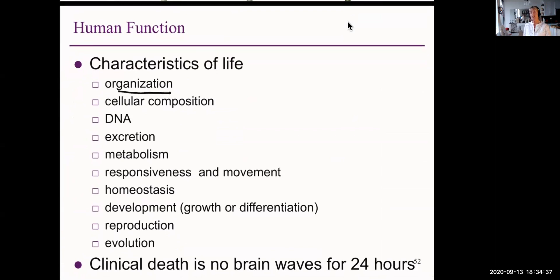Well, a characteristic of life is organization. Organization takes energy. A characteristic of life is cellular composition. All life consists of cells or is a cell. There are lots of singular cells out there. That's why a virus is not considered a life form. It is not a cell. It cannot reproduce itself.